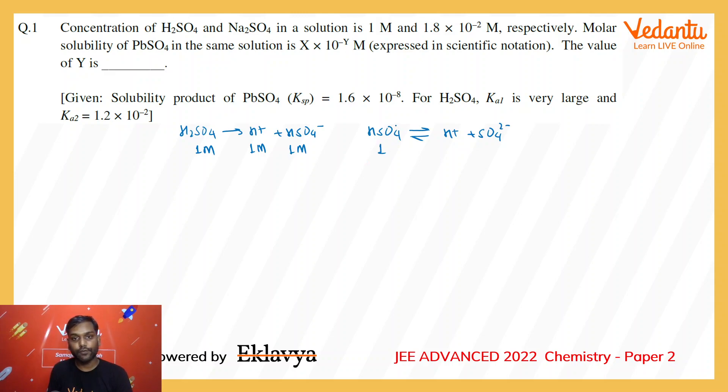Now for this reaction, in the beginning I have 1 molar of HSO4- ion coming from the previous step and H+ also coming from the previous step, and sulfate ion is 1.8 × 10^-2 coming from sodium sulfate.